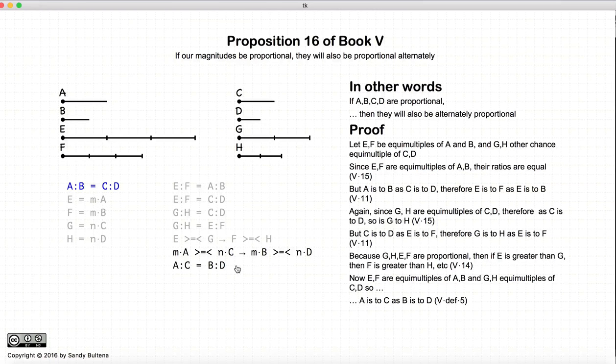So here we have just shown that A to C is equal to B to D. The ratios A to C and B to D are the alternate ratios of A to B and C to D. So here we have shown we start off with two ratios that are equal. The alternate ratios are also equal.